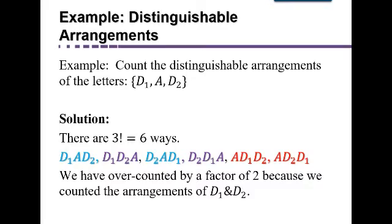So we've over-counted. D1, A, D2, and D2, A, D1. These are really the same. And then the two in purple are the same. D, D, A, D, D, A. And then the two in red are the same. A, D, D, A, D, D.